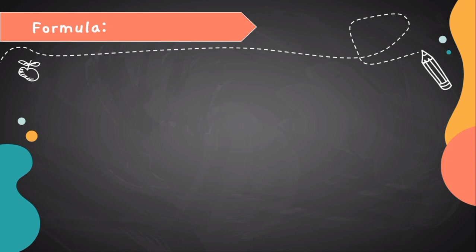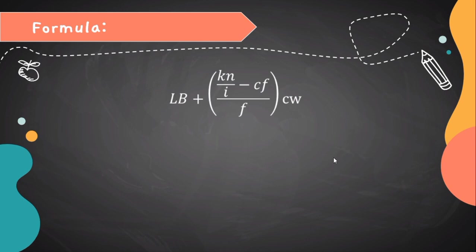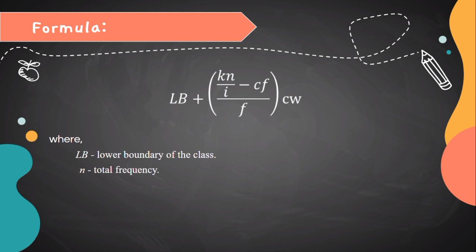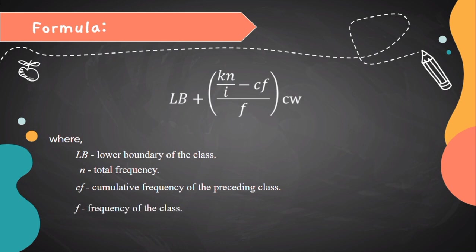Next, we need to know the formula that we use. The formula is: LB plus open parenthesis KN over I minus CF over F close parenthesis CW, where LB stands for lower boundaries of the class, N is total frequency, CF is cumulative frequency of the preceding class, F is frequency of the class, and CW is class width.